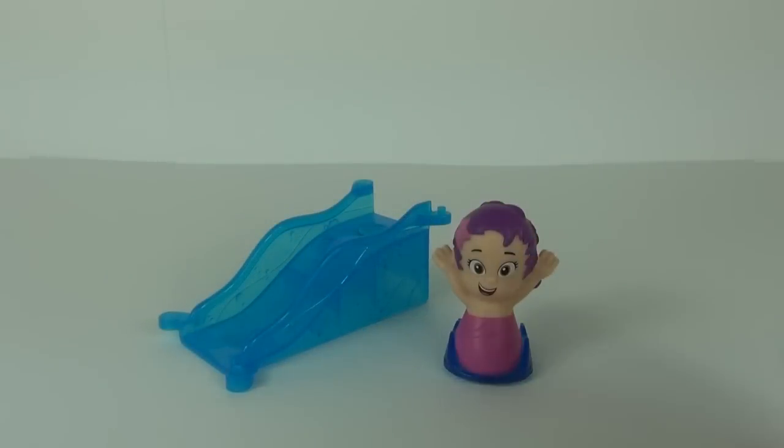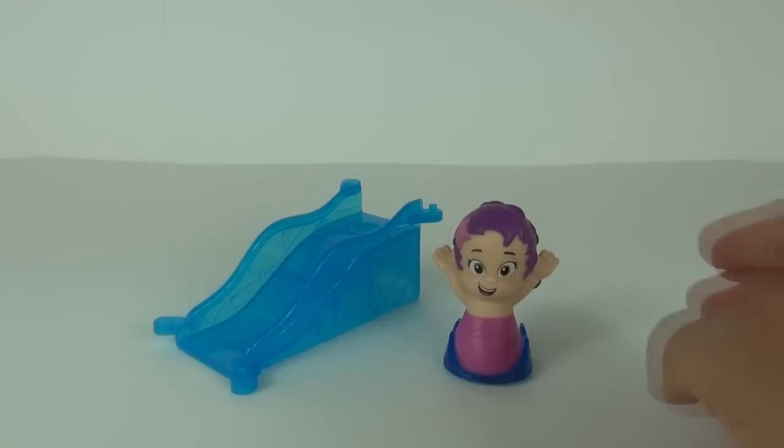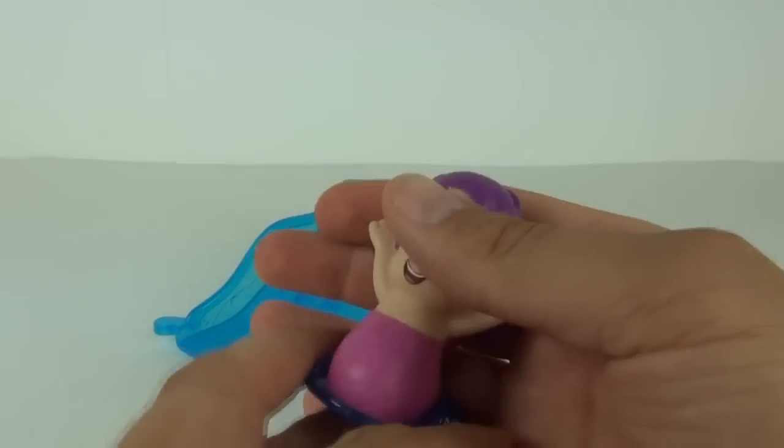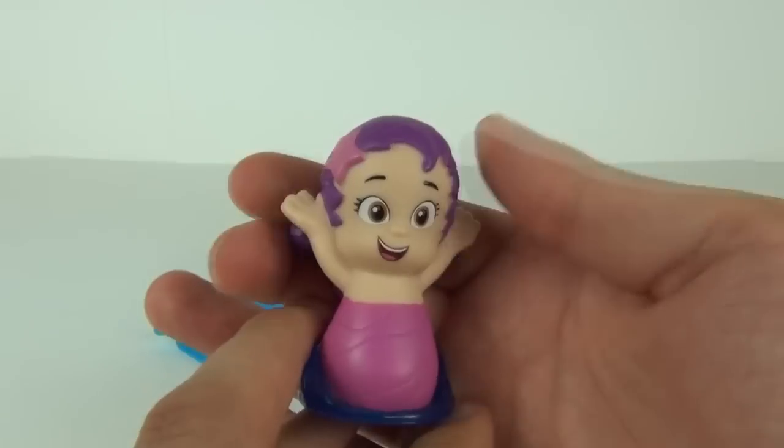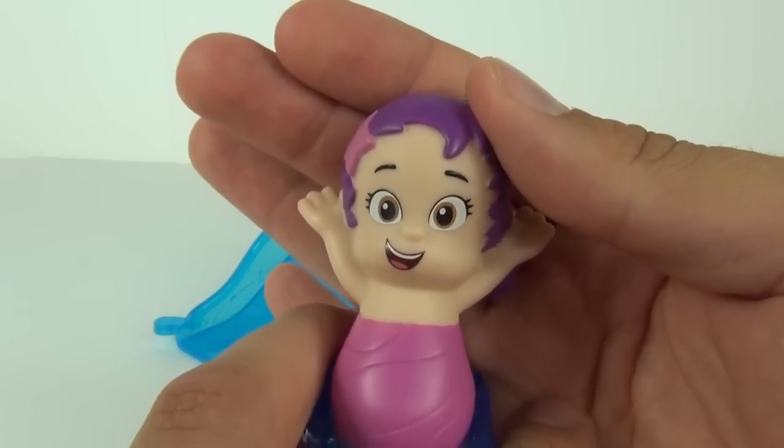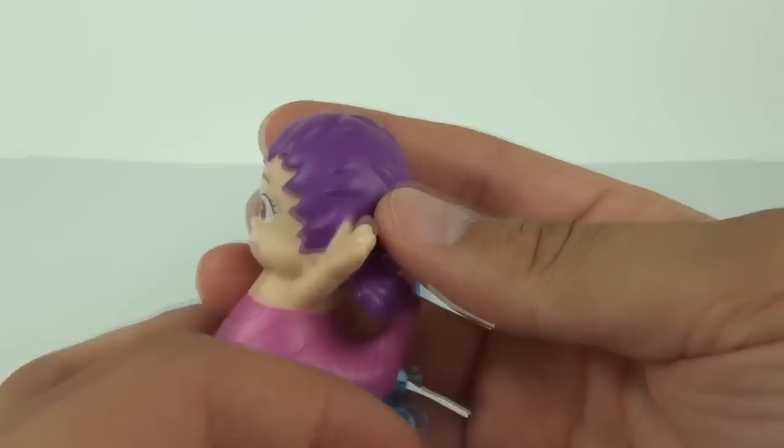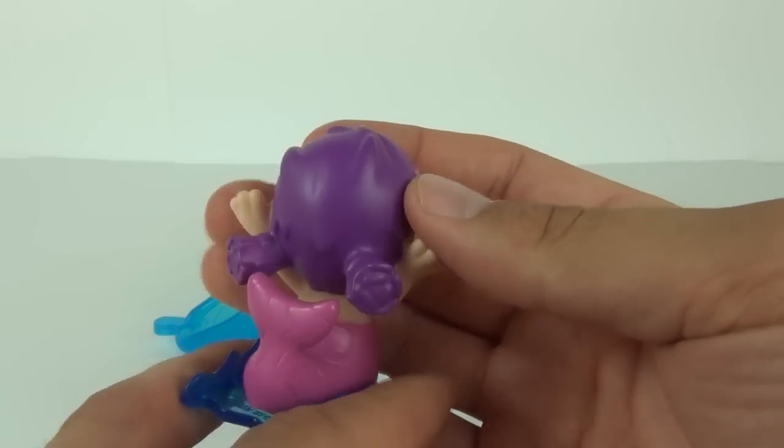So here we have Oona, and she does come with, of course, her portion of the slide that you can see there. Oona is giving you a double arm wave as you can see. She is very happy to see you and has a big smile on her face with big eyes as well, wide open.